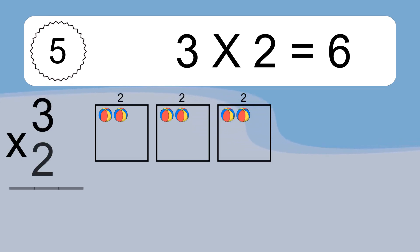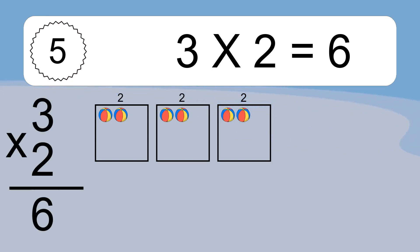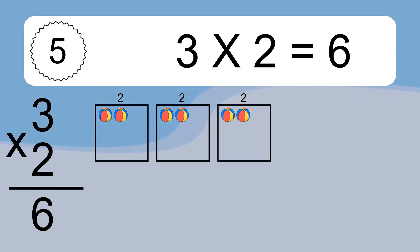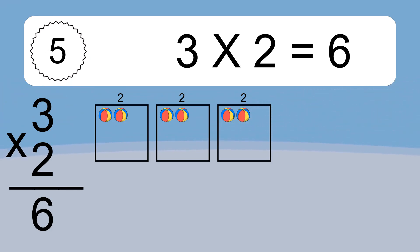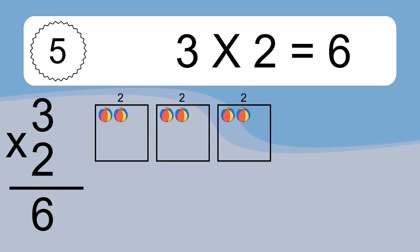3 times 2 equals what? 3 times 2 equals 6. We have 3 boxes, and each box has 2 colorful balls inside. If you count all the balls in all the boxes together, you will have 3 times 2 balls. This equals 6 balls.